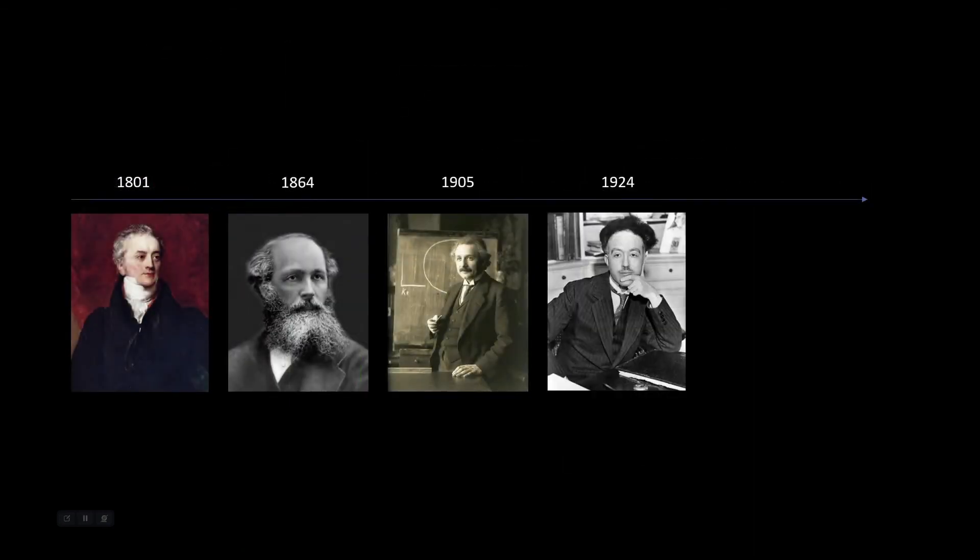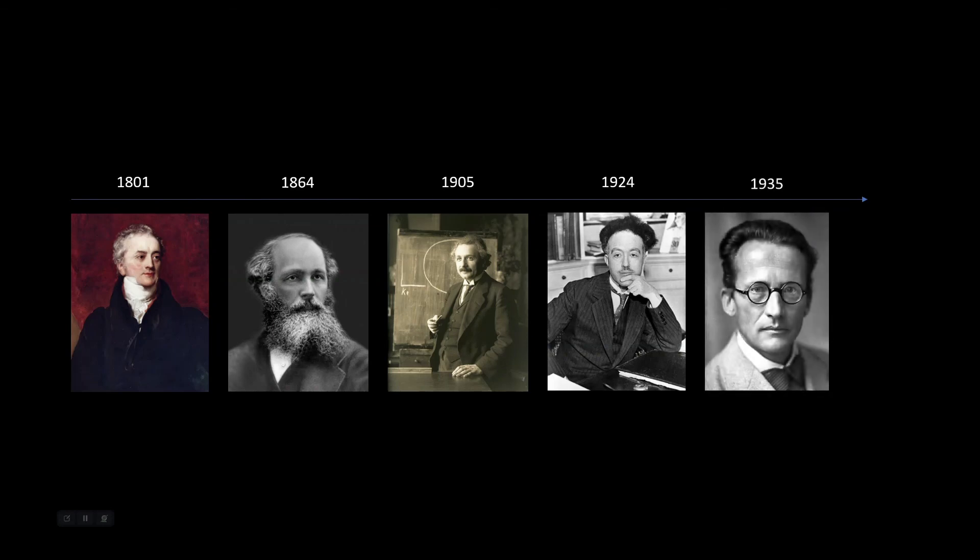So here we are in the late 1920s—wave-particle duality is a thing. But the question remains: when does the object decide to be a wave or a particle? In the next episode we will dive deeper into what happens when we observe things closer and what it means by the collapse of the wave function. We'll also talk about this man's cat. Who doesn't like cats, right? Stay tuned to part three of this series on All Things What.